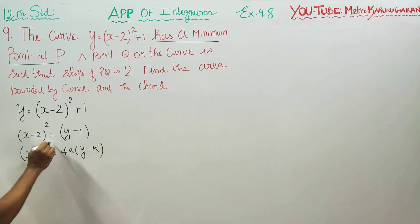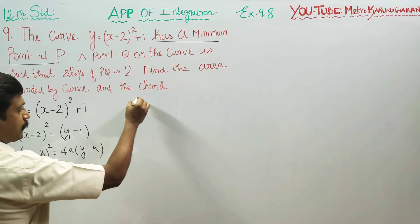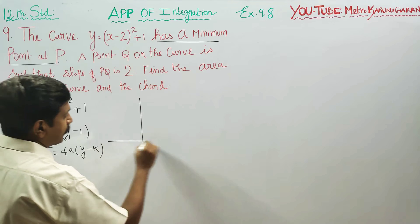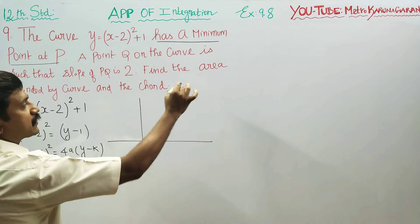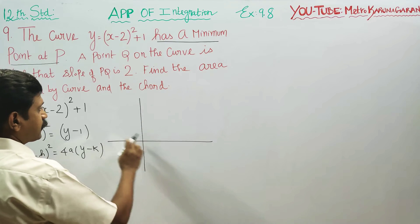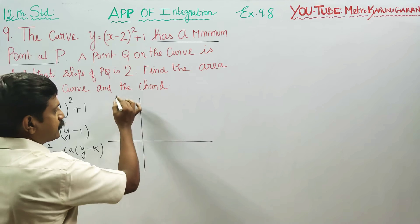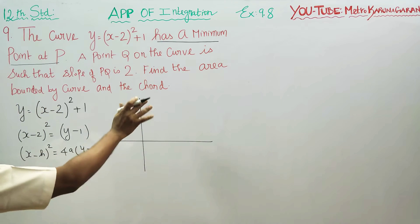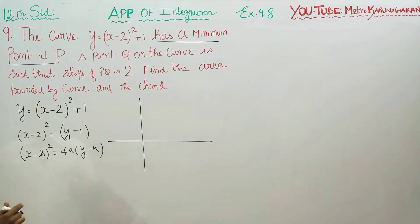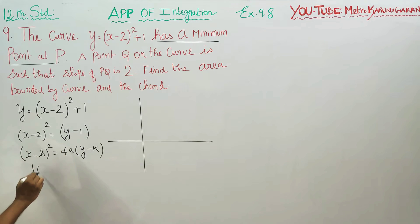This parabola is of the form x squared equals y-axis type, which is positive and opens upwards. So our parabola opens upwards and is symmetrical about the y-axis.